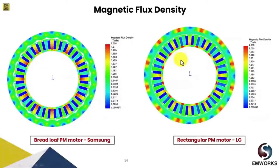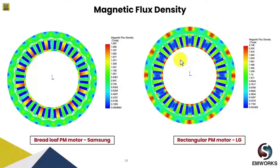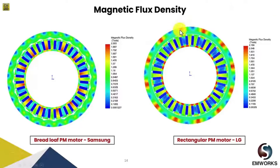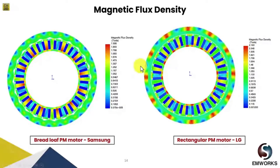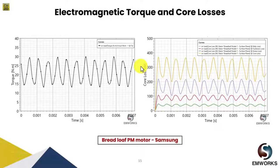On the other side, in the rectangular PM motor flux density plot, we can see that the rotor part is also getting saturated. The back iron core is going up to a peak of 2.2 Tesla. Since we found that the Breidloff PM motor design was more appropriate, moving ahead we will be discussing only the Breidloff PM motor.